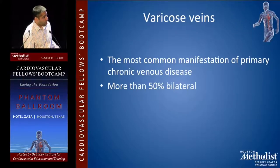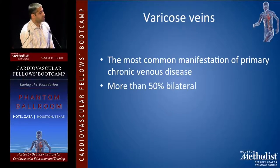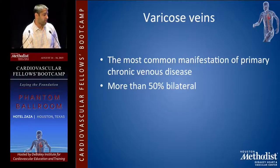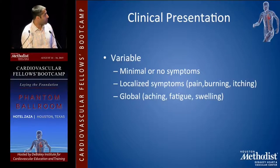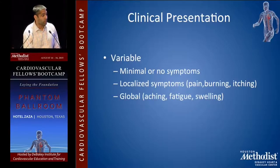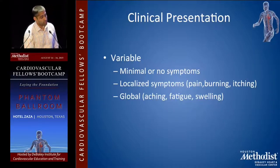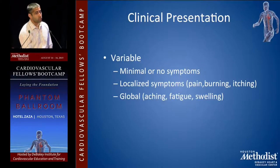The most common manifestation of primary chronic venous disease is varicose veins. More than 50% are bilateral. Clinical presentation is variable — sometimes minimal or no symptoms. Sometimes people have localized symptoms: pain, burning, itching. Sometimes you have global symptoms, especially associated with venous insufficiency: achy legs, fatigue, swelling.